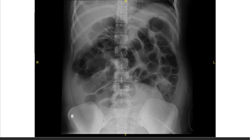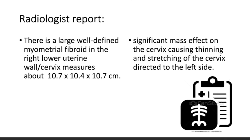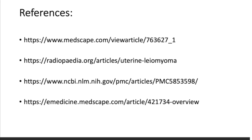This is an X-ray taken post-surgery, post-C-section, for the patient. The radiologist report noted a large, well-defined myometrial fibroid. The cervix size was measured for surgical planning, and there was a significant mass effect on the cervix, causing thinning and stretching of the cervix, deflecting it directly to the left side. Here are the references if you want to see more information. Thank you so much.